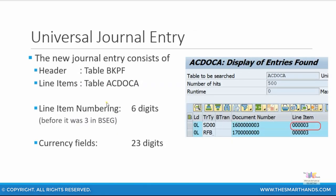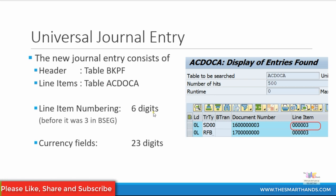How the journal entry works in the universal journal: the header table still remains the same. The BKPF header table for financial accounting is still the same as in SAP ERP. However, the line item table ACDOCA — which is the universal journal entry table — will contain all the line items required. In addition, certain limitations from the BSEC table in SAP ERP, such as the line item number being limited to 3 digits, have now been increased to 6 digits in ACDOCA, which means you can load more than 1,000 line items in one single entry.